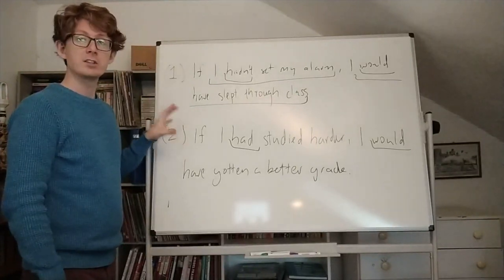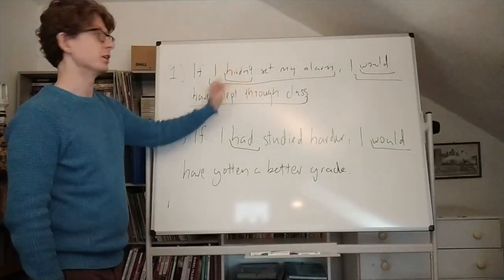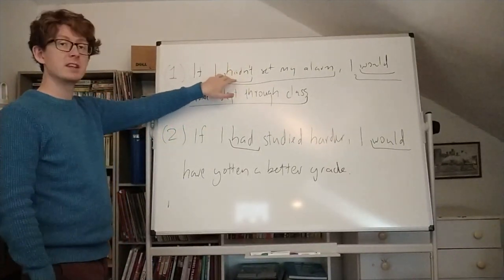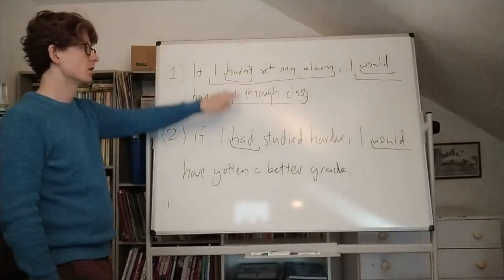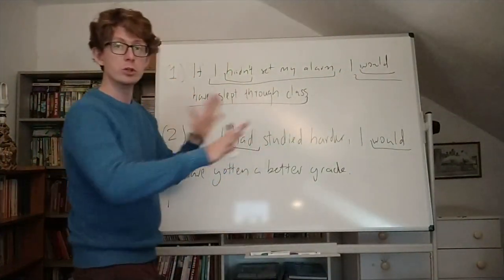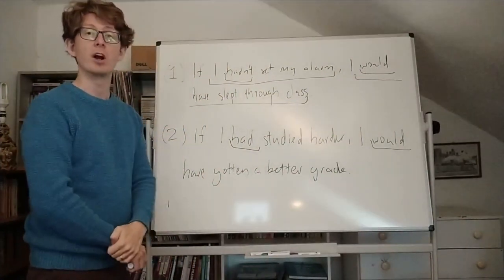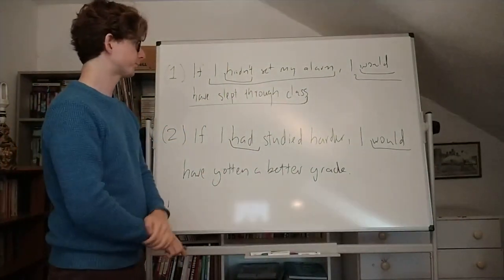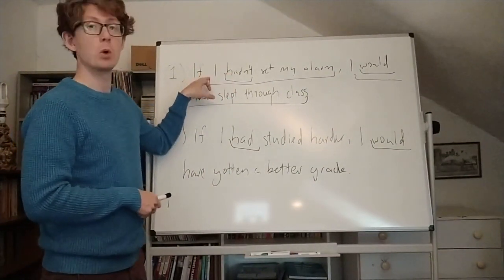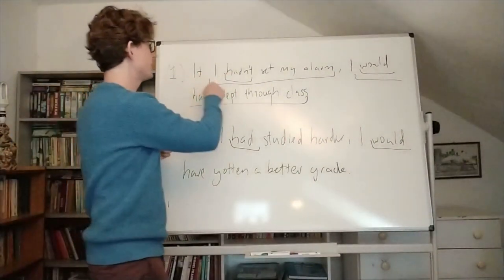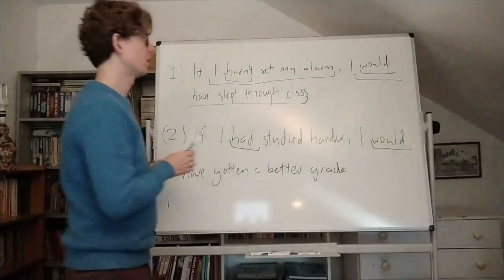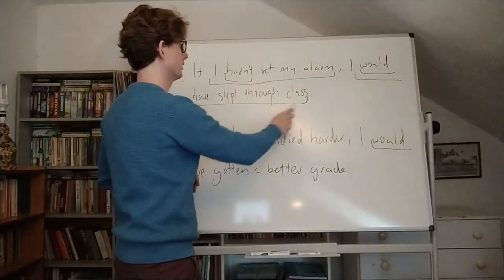We can tell that these are counterfactuals because of the kind of language in them. They use, in the beginning, things like 'had' or 'hadn't,' and in the consequent they use this language of 'would' or 'would not.' So the had/would combination — that's the mark of a counterfactual. In particular, the 'had' or 'were to' features in what we'll call the antecedent, and the 'would' features in what we'll call the consequent.